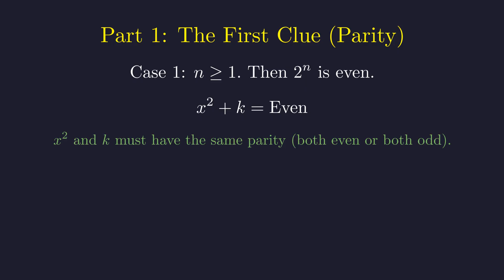For their sum to be even, x squared and k must have the same parity. And since a number and its square always have the same parity, x and k must both be even or both be odd.